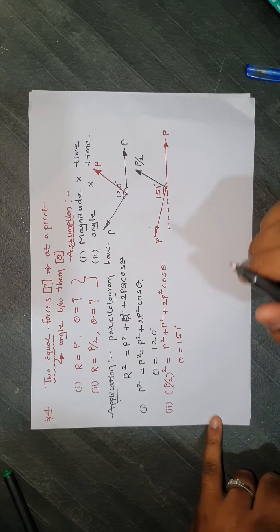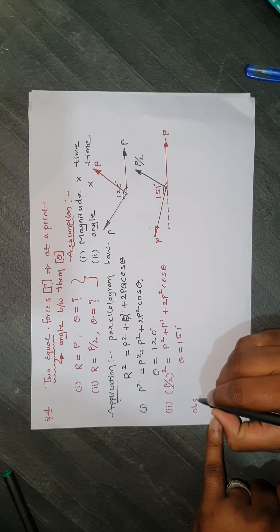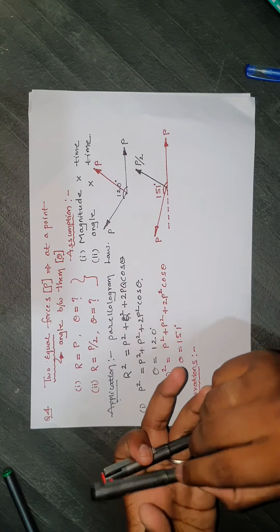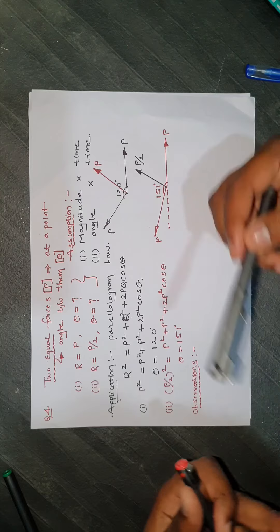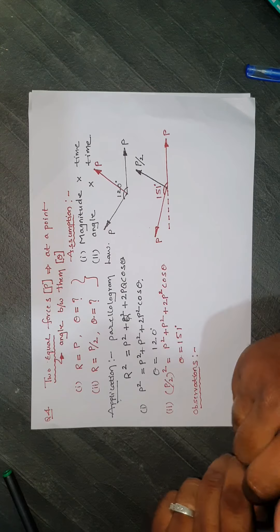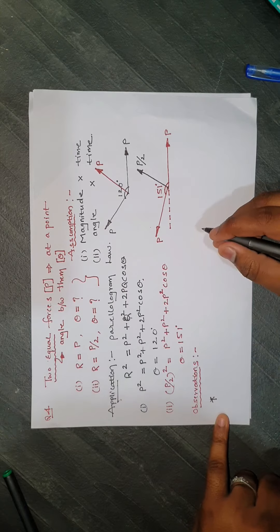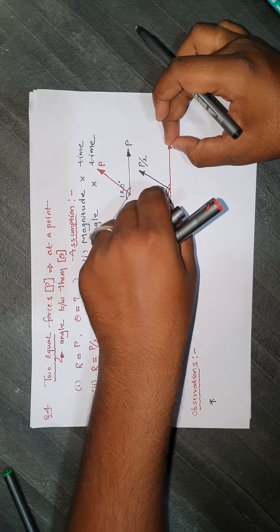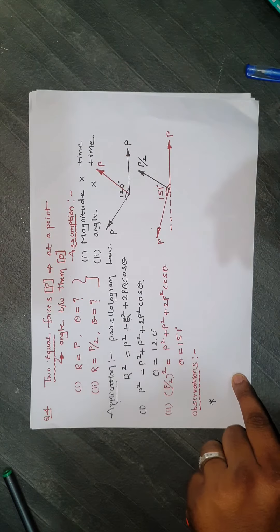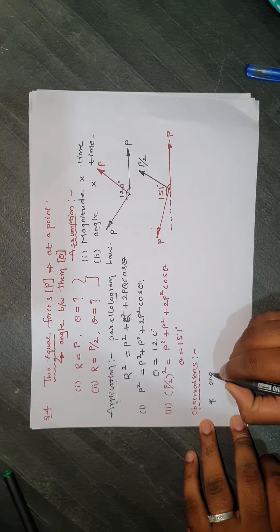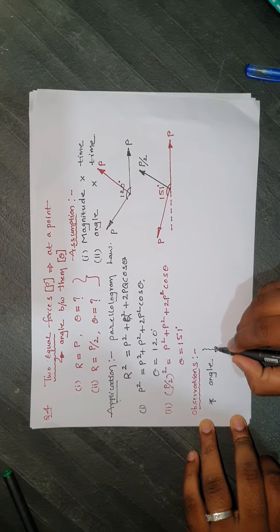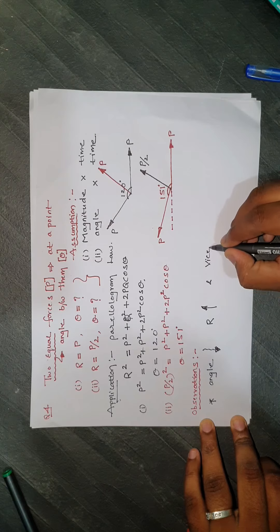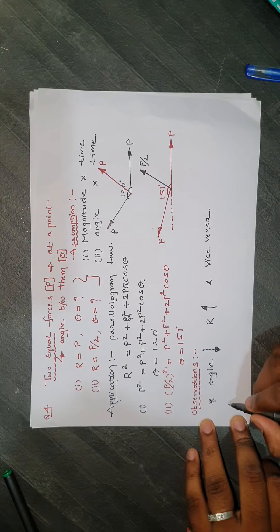From these results, we can make observations — though observations vary from person to person. The first observation: without changing the magnitude of the two forces, if the angle between them increases, the resultant decreases; and if the angle decreases, the resultant increases.